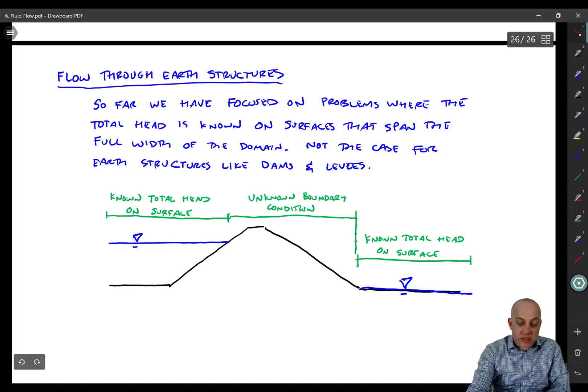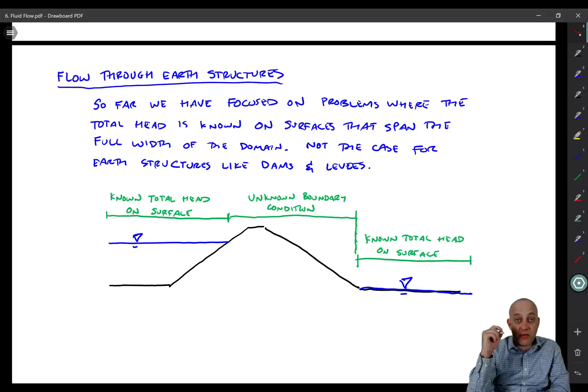It might be tempting to say that we do know the total head all along this line. But the problem is that the water may not actually be up there. It's going to flow through the center of the levee in some way. And so we have to try and estimate the position of where that water is flowing before we can solve this problem.